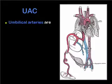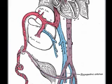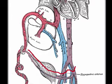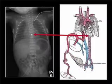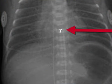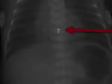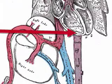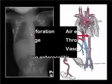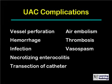The course of umbilical artery catheters is through the umbilical arteries, down slightly into the internal iliac arteries, then up the descending aorta into the thoracic aorta. The tip of an umbilical artery catheter at the level of T7 corresponds roughly to the point shown on the diagram, except it would be behind the heart. Complications of umbilical artery catheters include vessel perforation, air embolism, hemorrhage, thrombosis, infection, vasospasm, necrotizing enterocolitis, and transection of the catheter.